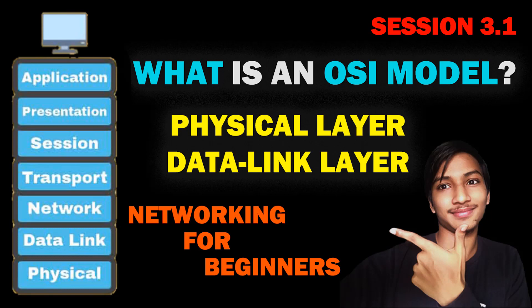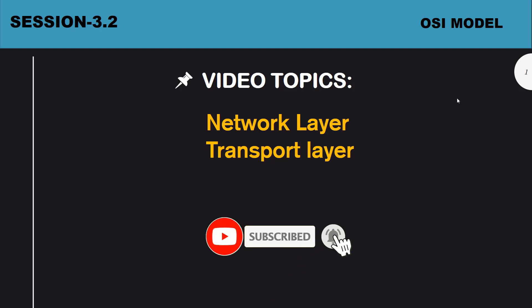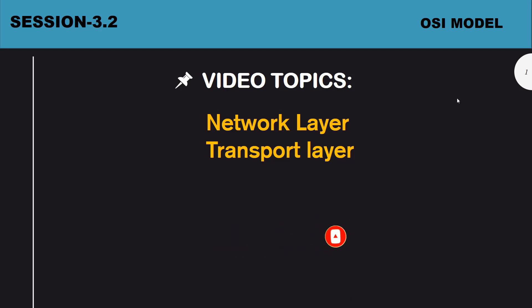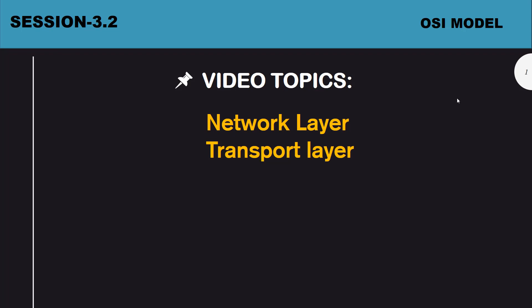These layers are part of the OSI model. The OSI model has seven layers. I discussed two layers in my previous video along with the uses of the OSI model. If you didn't watch those videos, please go watch them and come back — you'll get more clarity and understand this video more clearly.